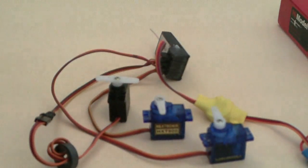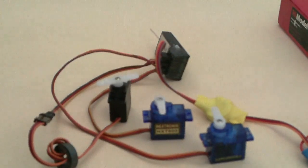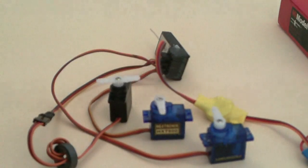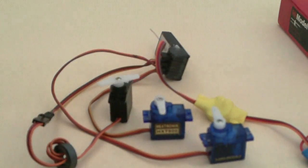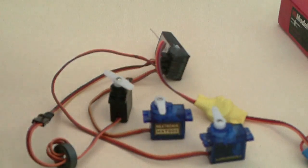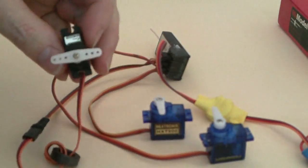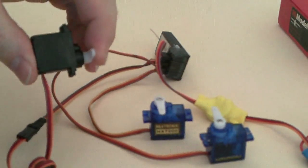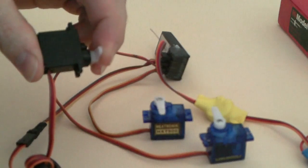Now with the rudder Corona servo, we no longer get any twitching on the aileron and elevator. The HXT 900 is very sensitive to noise on the PPM control wire. The Corona servo, it's digital and it updates the servo position quite often.